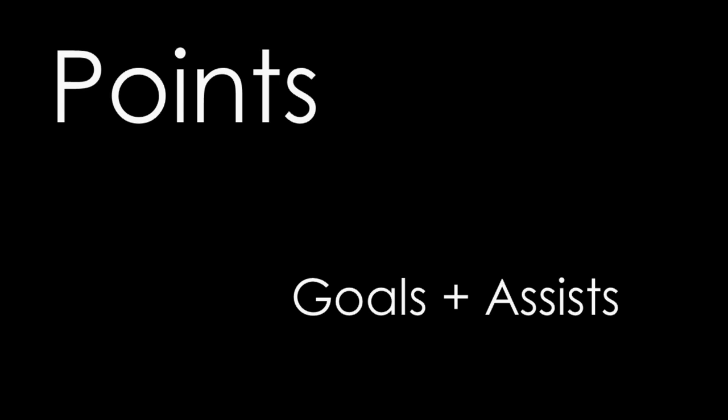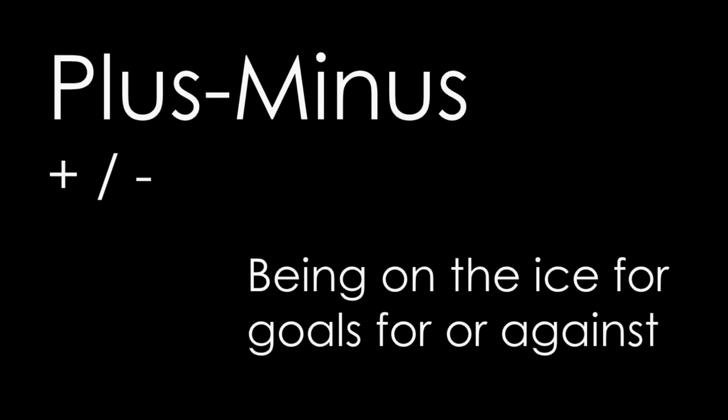Plus/minus is a very simple way to try to incorporate both offense and defense into one stat. The way that it works is that if you are on the ice when your team scores a goal, you get a plus one. And if you are on the ice when the other team scores a goal, you get a minus one. There are a few exceptions to this. First, power play goals are not considered for plus/minus, so a power play goal will not earn you a plus. And if you are on the penalty kill and the other team scores against you, that will not count against you.